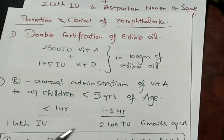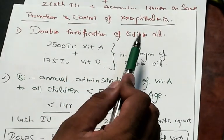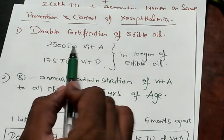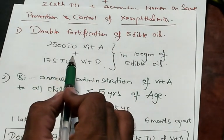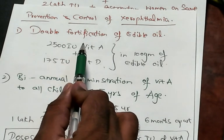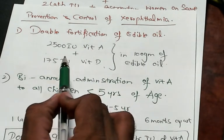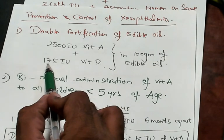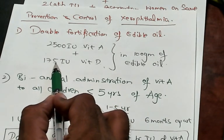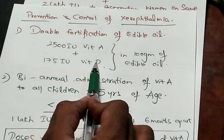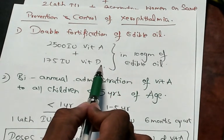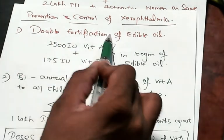How do you prevent and control xerophthalmia? Favorite question of the examiner. We do double fortification of edible oil. 2500 international units of vitamin A, with 175 international units of vitamin D, per 100 grams of edible oil. That is double fortification, vitamin A with vitamin D.